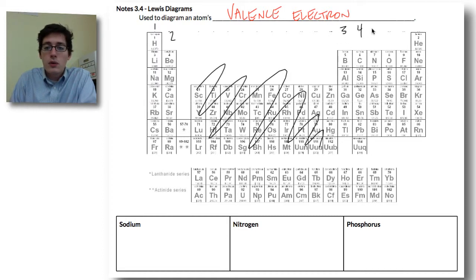and then group three, four, five, six, seven, and eight. All of that is going to come back and apply into the valence electron, or into the Lewis diagrams.